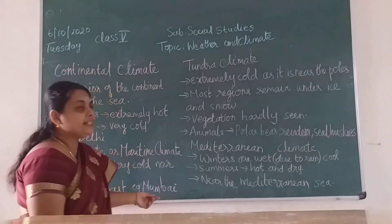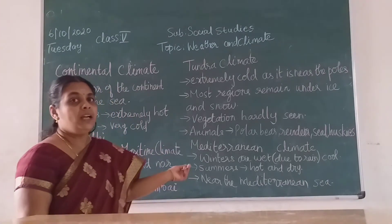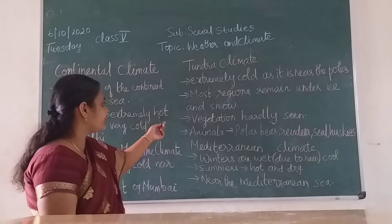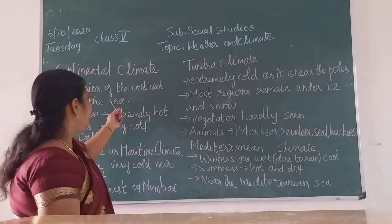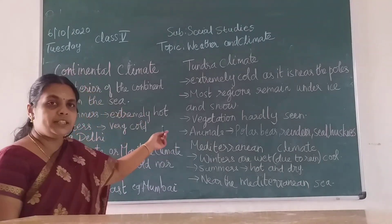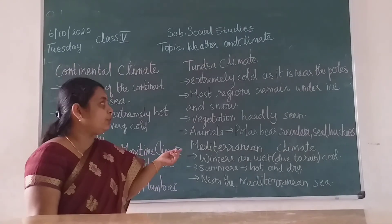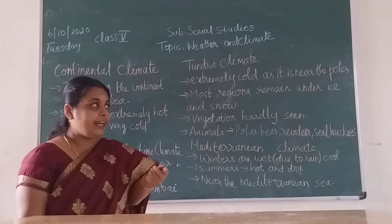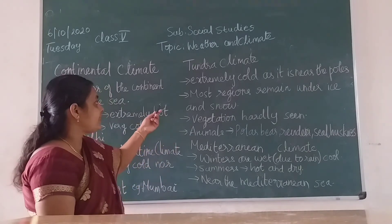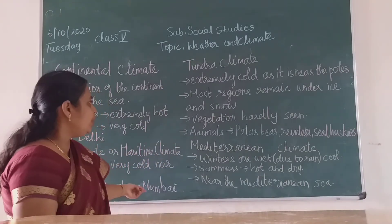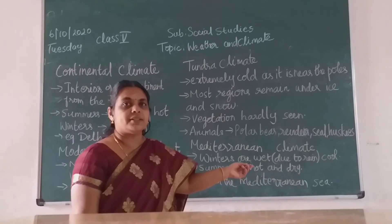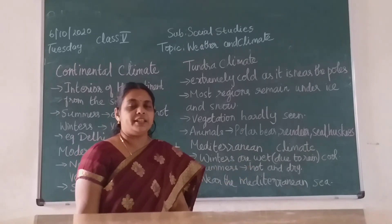So these are the seven types of climate given in the book children. Learn this — take your textbook, read about it, and some pictures are given. Locate the places and identify where Delhi and Mumbai are, and the Tundra regions. See you in the next class. Thank you.